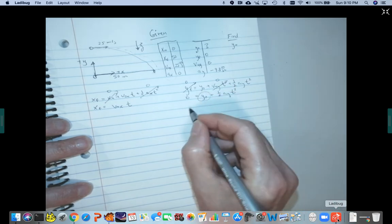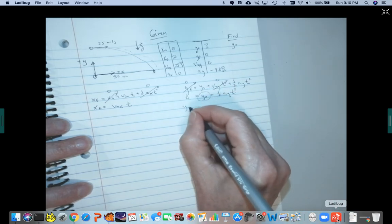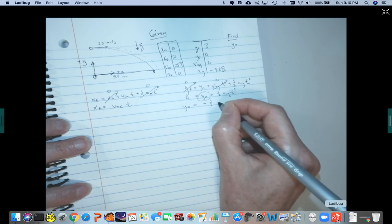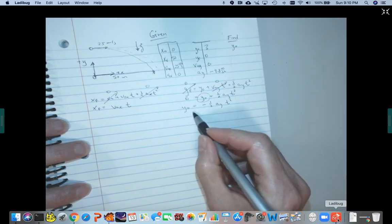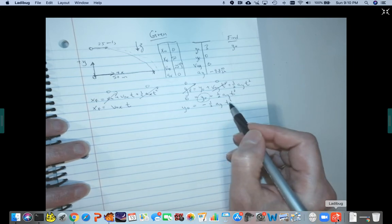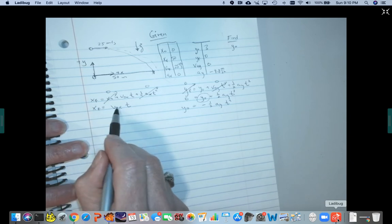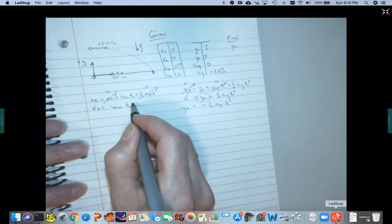Now this is what we want to solve for. So we know that y initial equals, bring that over to the other side, negative one half ay t squared. Okay, so I know my acceleration. I don't know time. But if I look over at my x equation, I know x final. I know v0x. And so I can solve for time here.